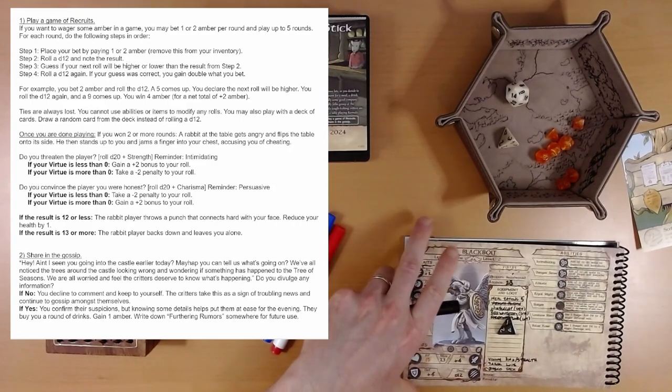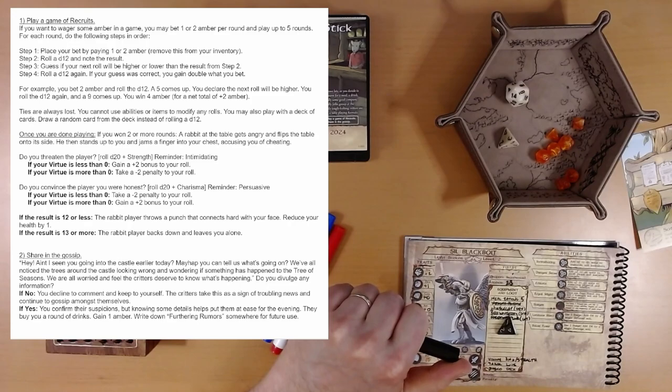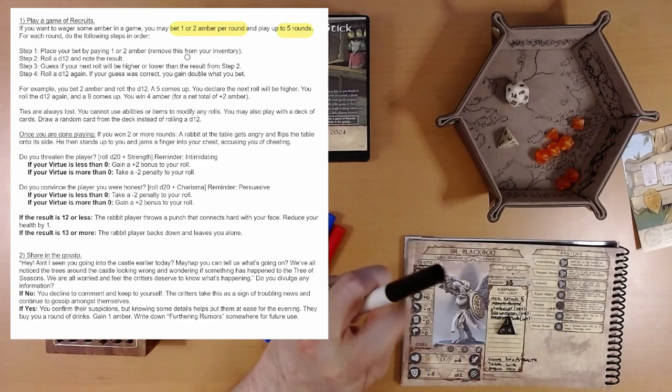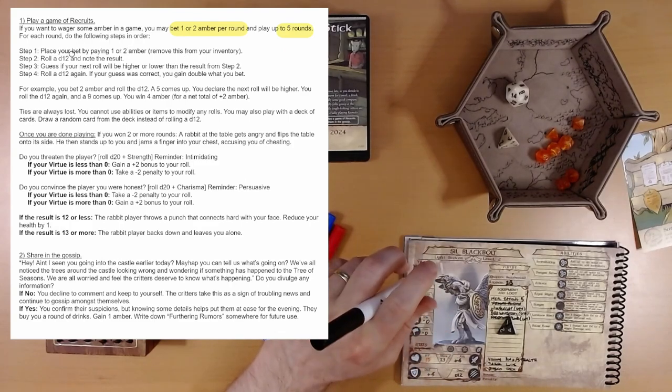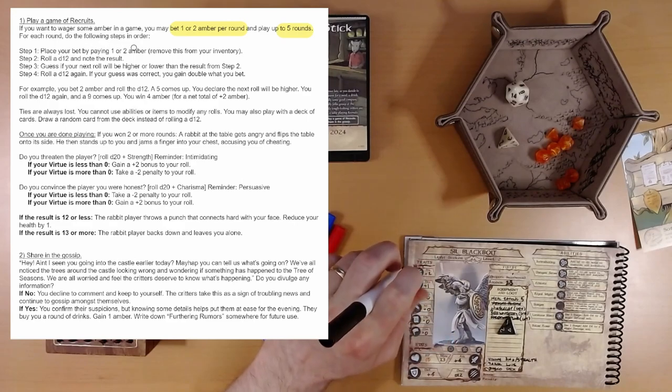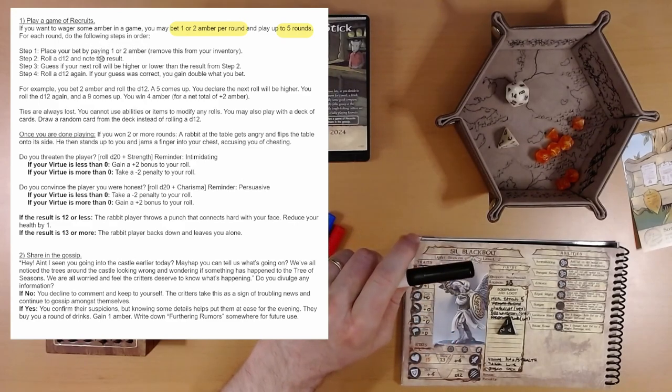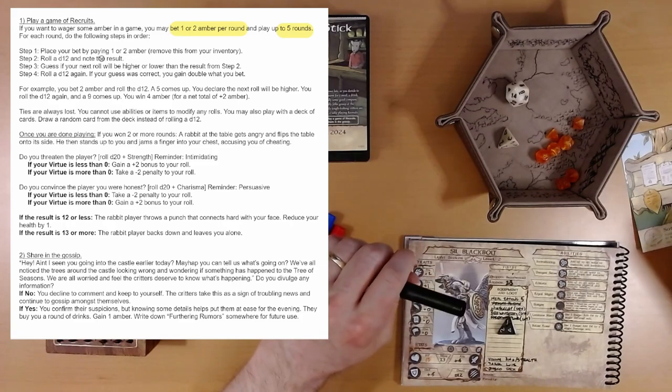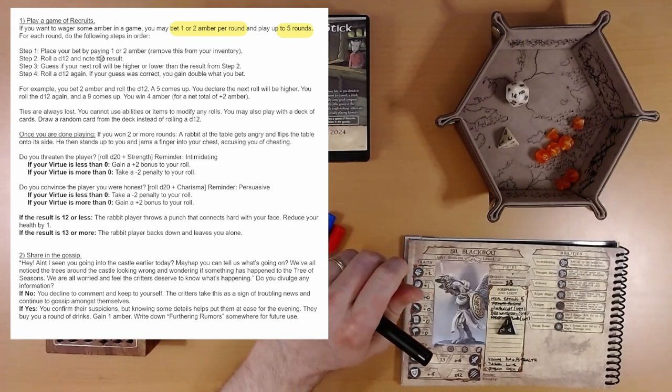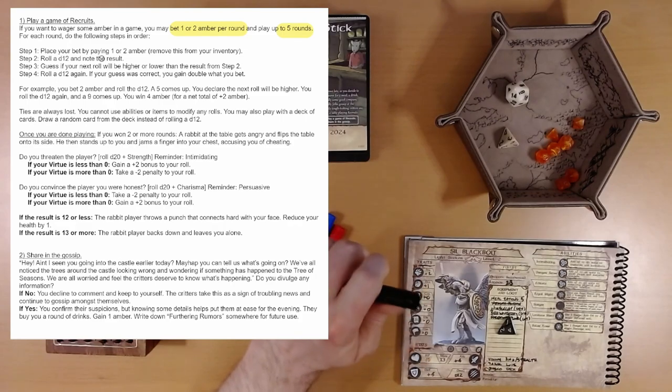Play a game of recruits. If you want to wager some amber in a game, you may bet one or two amber per round and play up to five rounds. For each round, do the following steps in order: place your bet. Roll a d12 and note the result. Guess if your next roll will be higher or lower than the result. And roll a d12 again. If you were correct, you gained double what you bet. And then there's an example. Ties are always lost. You cannot use abilities or items to modify any rolls.